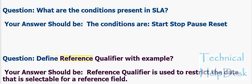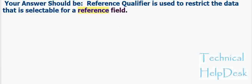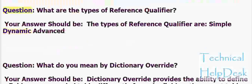Define reference qualifier with example. A reference qualifier is used to restrict the data that is selectable for a reference field. The types of reference qualifier are: simple, dynamic, and advanced.